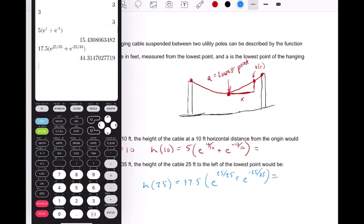Boom. We get about 44.315. So 15.431 and 44.315.